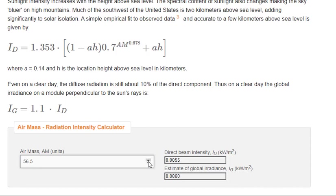Sunlight intensity increases with the height above sea level. The spectral content of sunlight also changes making the sky bluer on high mountains. Much of the southwest of the United States is 2 kilometers above sea level, adding significantly to solar isolation. A simple empirical fit to observed data, accurate to a few kilometers above sea level, is given by the equation.